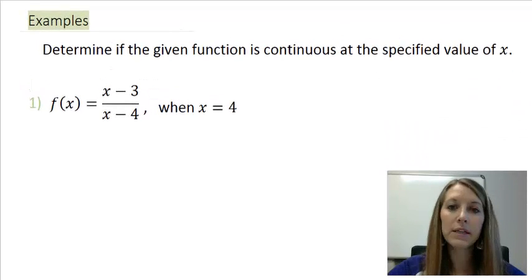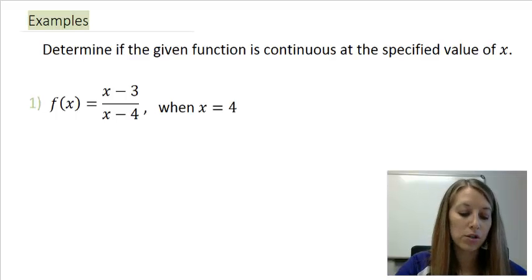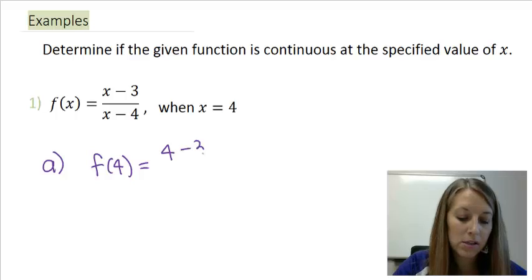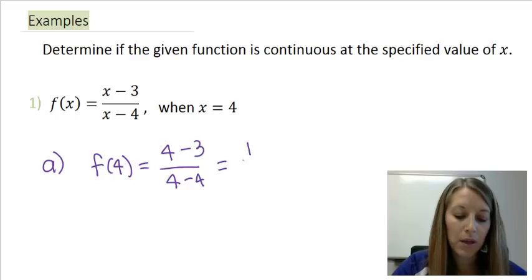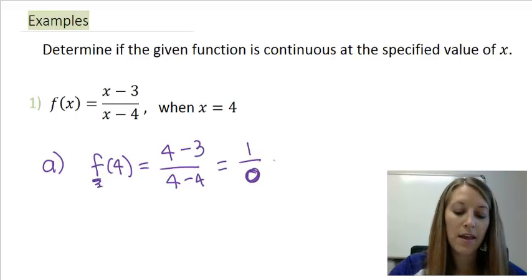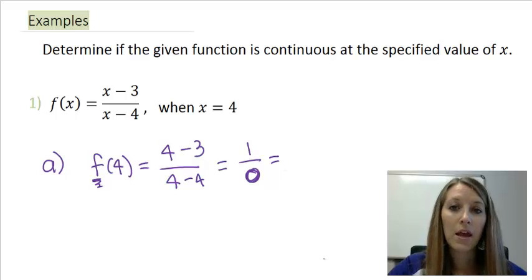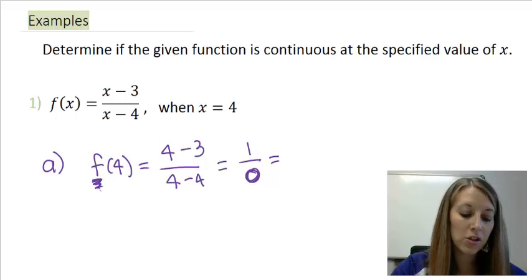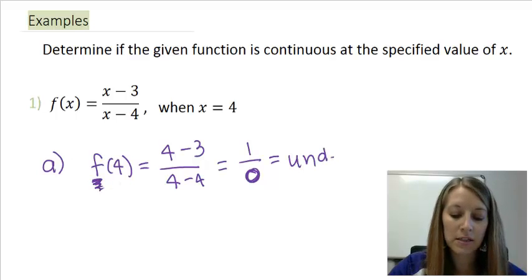Let's start with property a: we have to prove that f(4) is defined. We plug 4 into the function: (4-3) in the numerator and (4-4) in the denominator. On top we get 1, on the bottom we get 0. In function notation, dividing by zero means this is undefined.